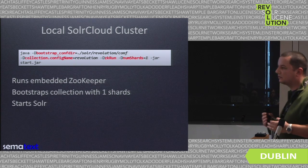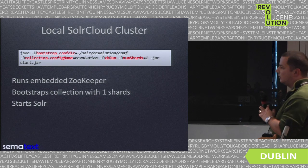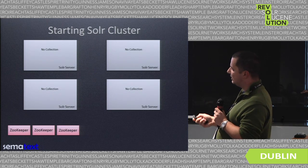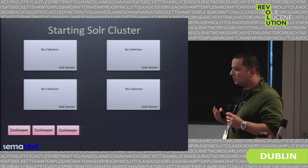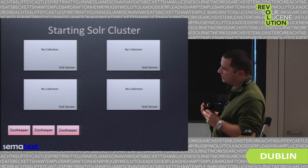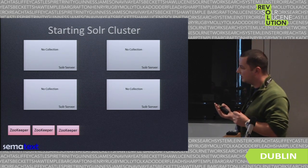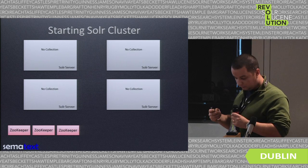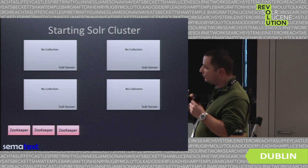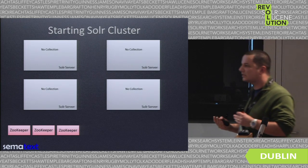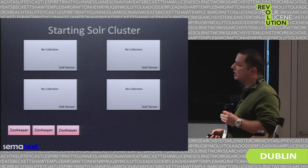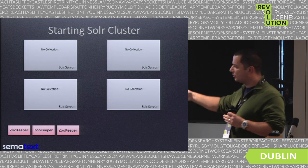Let's imagine that we have a cluster and a ZooKeeper ensemble. What is a ZooKeeper ensemble? In order for SolrCloud to operate, it needs ZooKeeper — it's an Apache product that Solr uses to manage the cluster state, configurations, choose the leaders, and do all the syncing. What we need to do is start a cluster and point each Solr server to the ZooKeeper ensemble by specifying the ZK host and pointing it to one of the ZooKeeper servers.